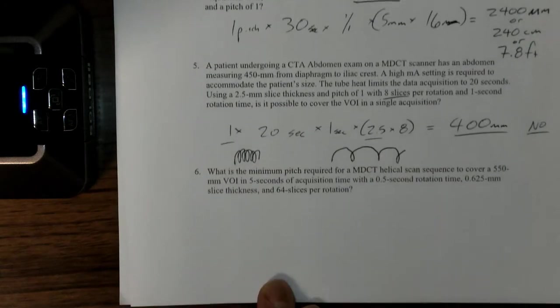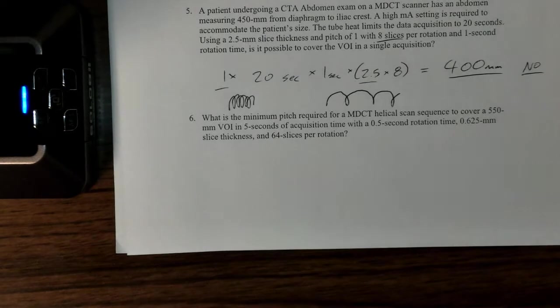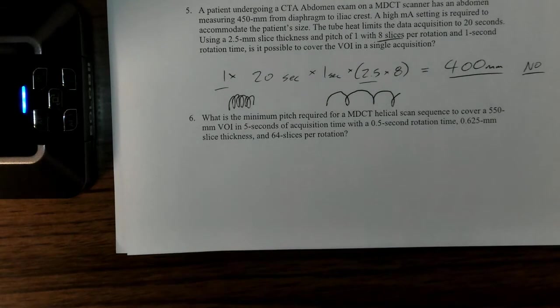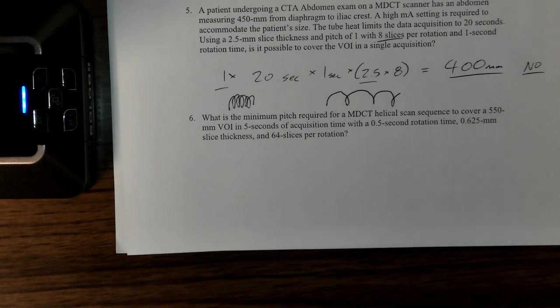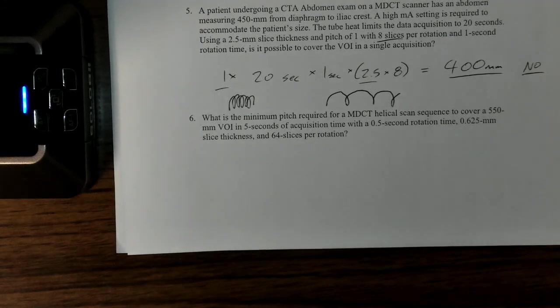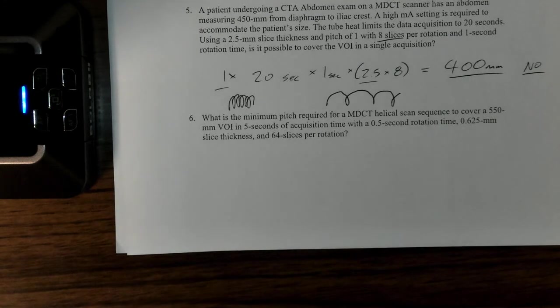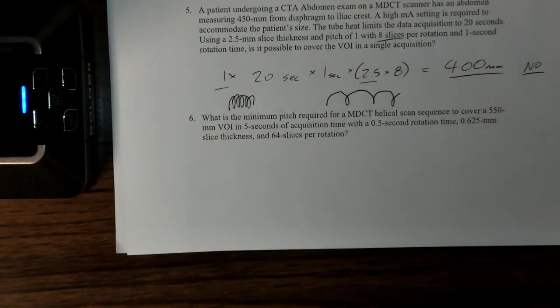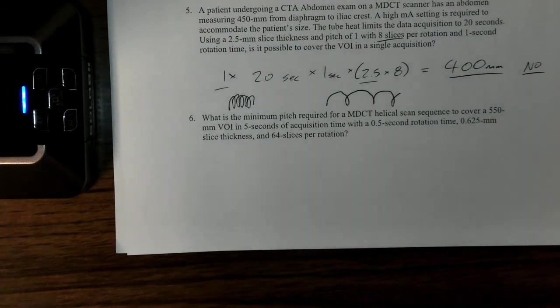Okay, moving along. What is the minimum pitch required for a multi-detector CT scan sequence to cover a 550-millimeter volume of interest in five seconds of acquisition time with a 0.5 rotation time and 0.625-millimeter slice thickness and 64 slices per rotation? We have a scan upgrade now and we're trying to do some thinner slices but we're trying to do something quick.